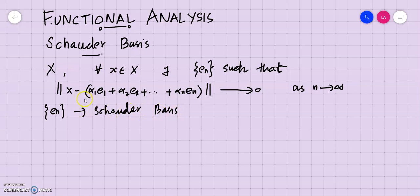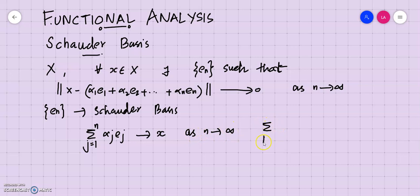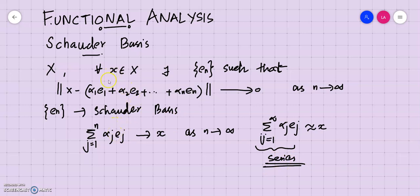This is not the type of basis we defined in earlier cases for vector spaces. This is a basis which relates every element to a summation expression: α₁e₁ + α₂e₂ + ... + αₙeₙ, which can be written as the summation from j=1 to n of αⱼeⱼ. This should go to x as n tends to infinity, so in general, the summation from j=1 to infinity of αⱼeⱼ should equal x.